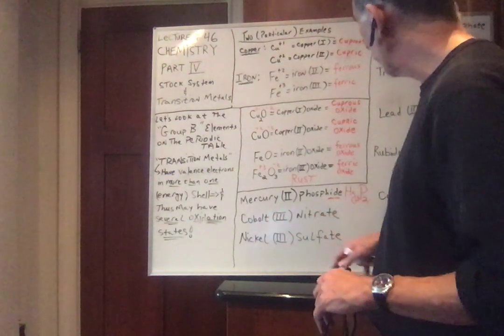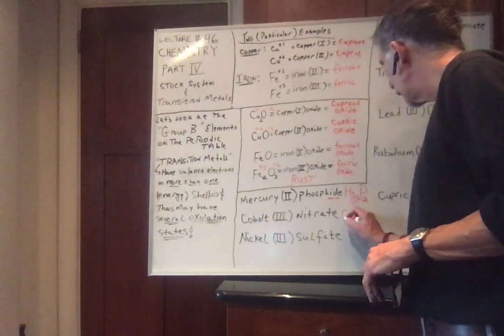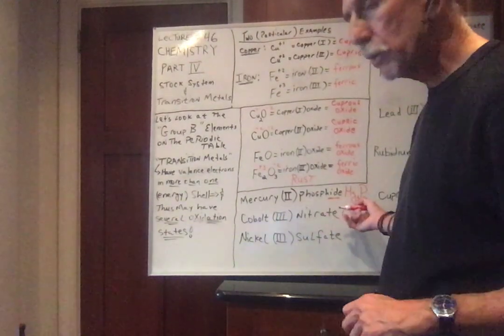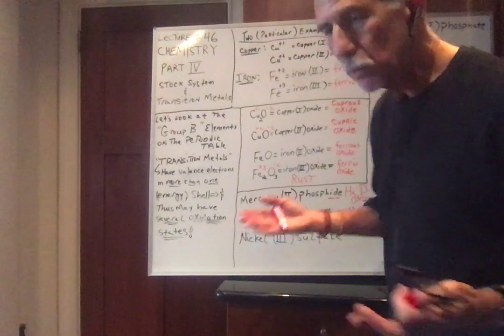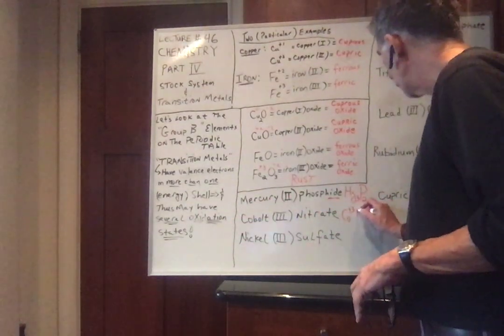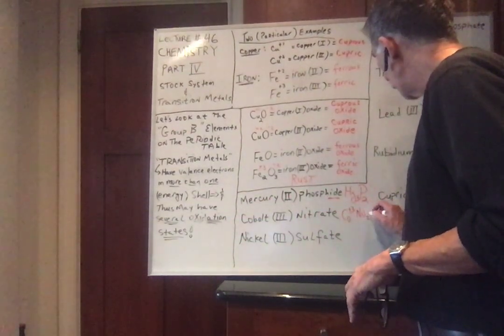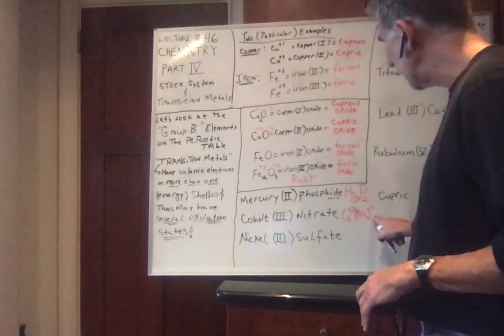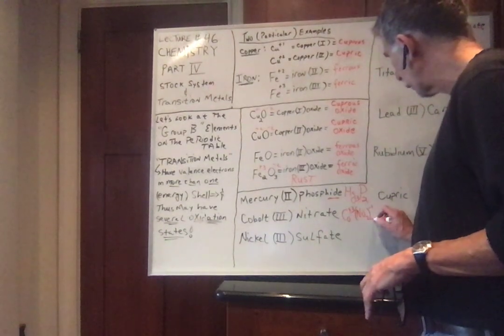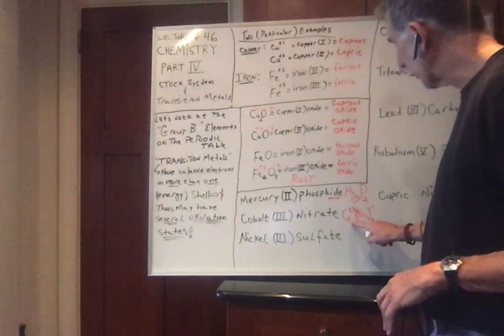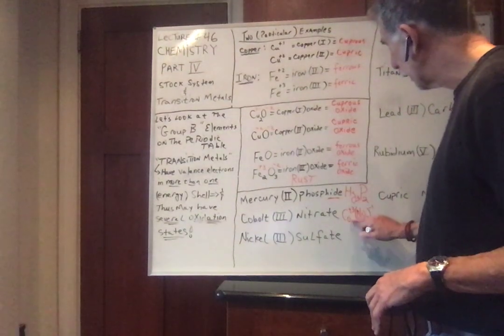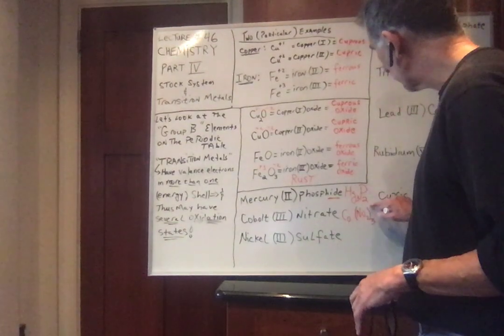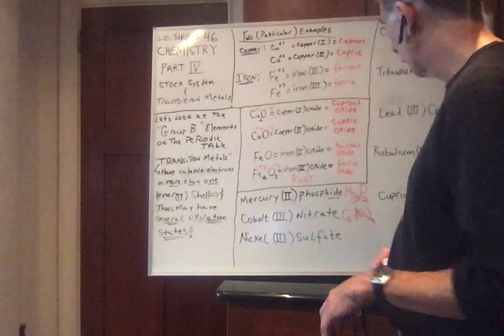Let's do cobalt 3 nitrate. Cobalt 3 nitrate is Co, the charge is plus 3. How do I know the charge of cobalt 3 is plus 3? Because I'm telling you it's plus 3, stock system. Nitrate is NO3 with a minus 1 as the oxidation number. This gives 3 electrons, this needs 1 electron, so we need 3 of these to 1 of those. So I can erase that 1 and I can also erase the oxidation numbers now. So this is cobalt 3 nitrate.